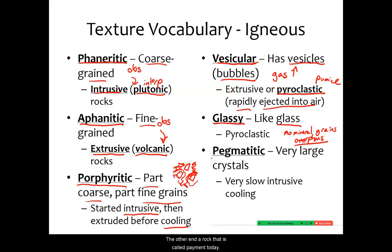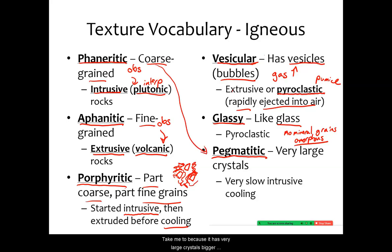On the other end, a rock that is called pegmatitic is a variation of phaneritic. It's pegmatitic because it has very large crystals, bigger than one centimeter long, and that means it must have cooled intrusively very, very slowly.